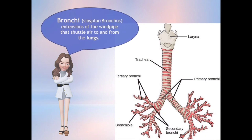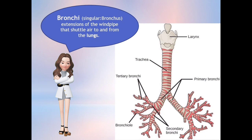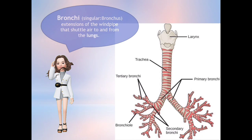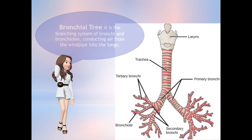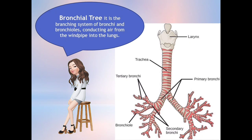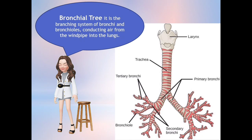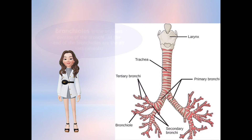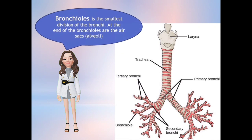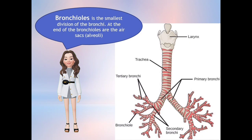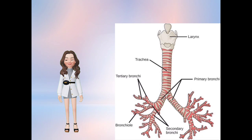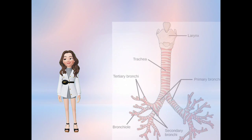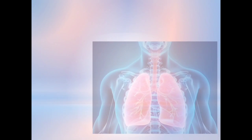Next to the trachea are the bronchi, which is the extension of the windpipe that shuttles air to and from the lungs. Next are the bronchial trees, which serve as the branching system of the bronchi and bronchioles that conduct air from the windpipe into the lungs. Next are the bronchioles, which are the smallest division of the bronchi. The bronchi, bronchial tree, and bronchioles are located inside the lungs.